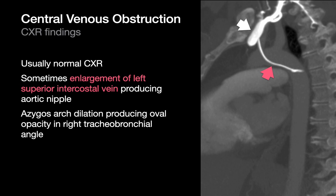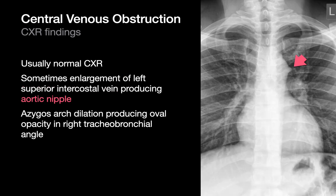One example is the left superior intercostal vein, which is a tributary of the left brachiocephalic vein. I've got a white arrow pointing at the left brachiocephalic vein and a pink arrow pointing at the left superior intercostal vein. The left superior intercostal vein is normal in this image, but in central venous obstruction it can become dilated. Since it parallels the lateral margin of the aortic arch, you may see a bump along the lateral margin — people refer to this as the aortic nipple.